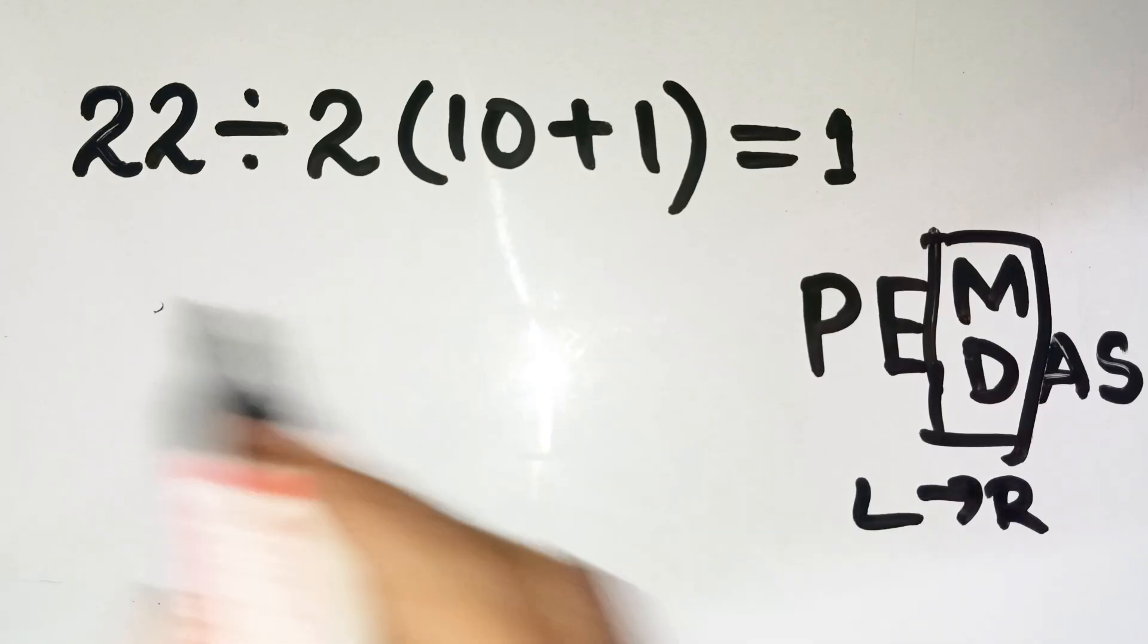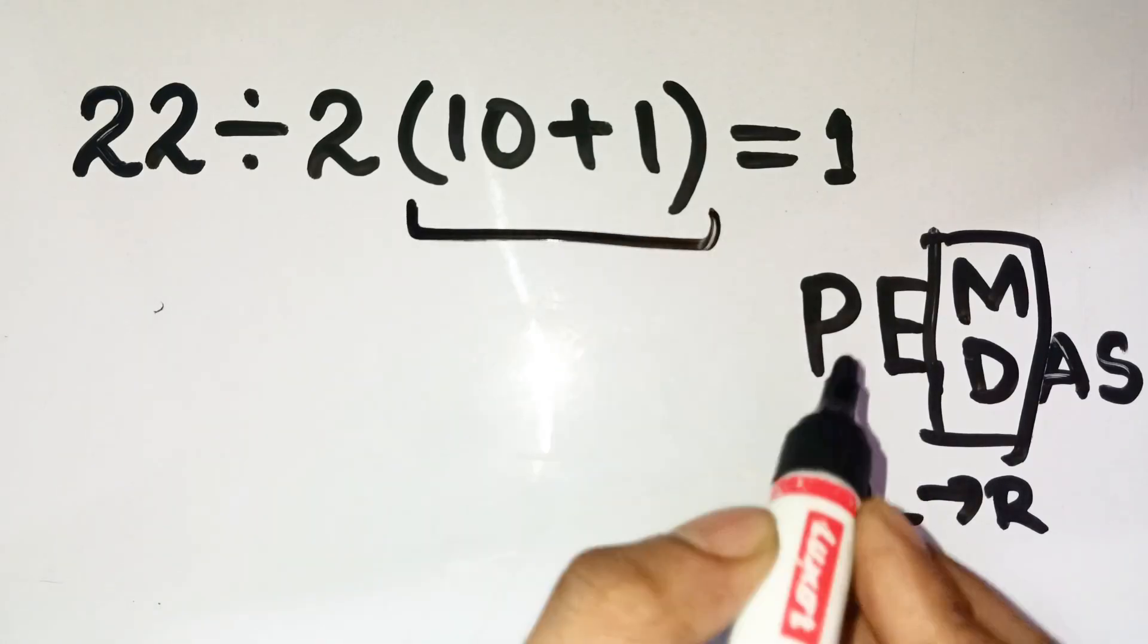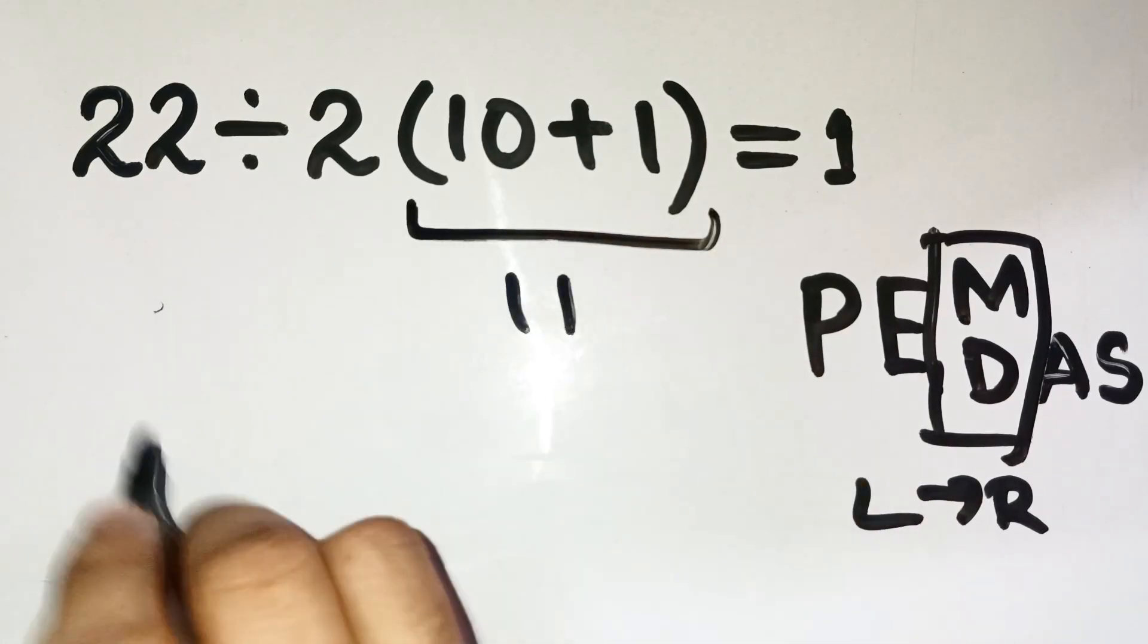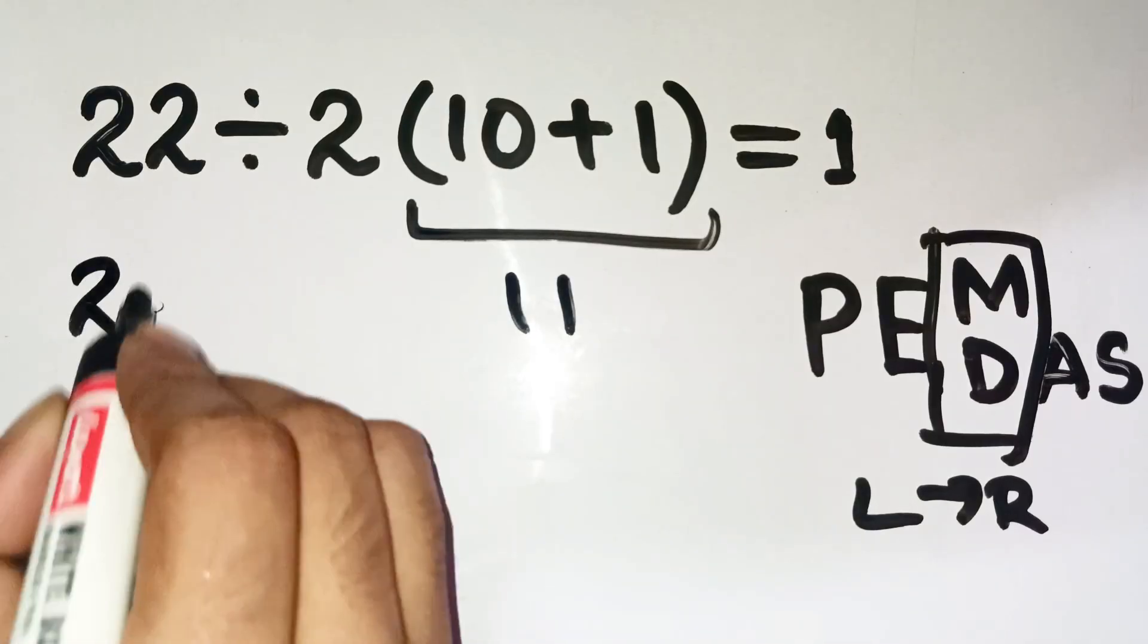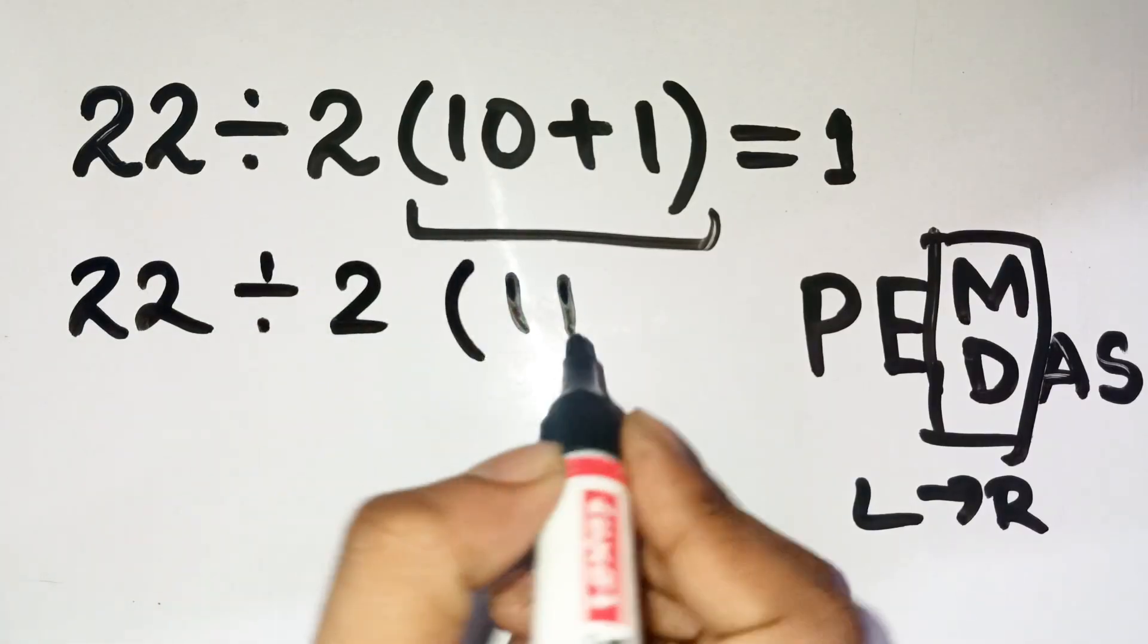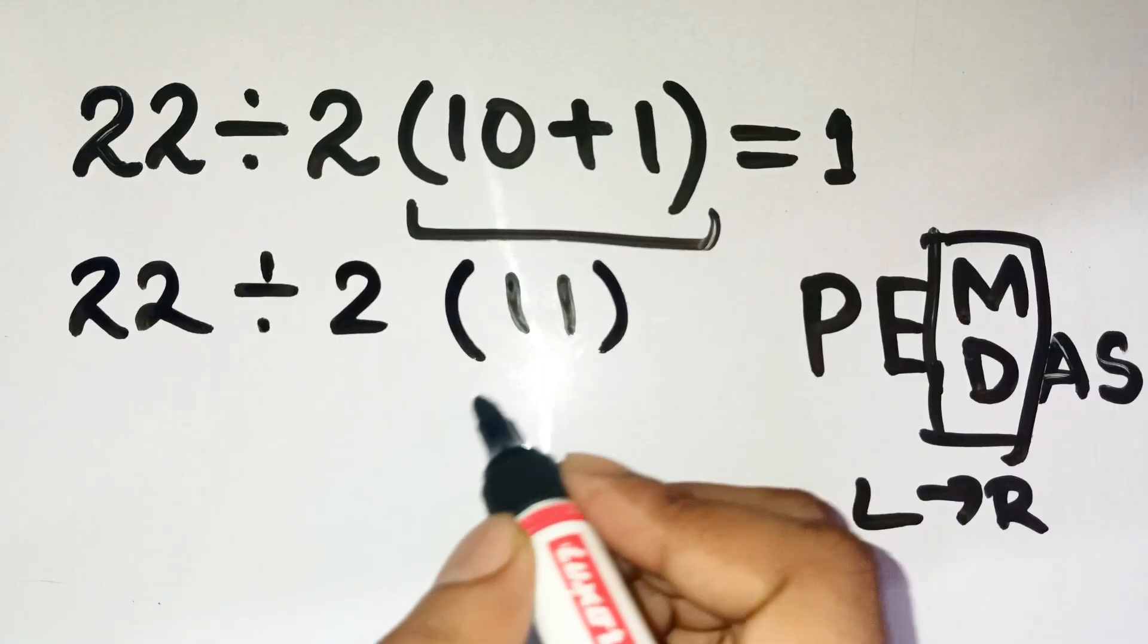Alright, step 1, the parenthesis. Inside, 10 plus 1 equals 11. Now, the problem becomes 22 divided by 2, open parenthesis, 11, close parenthesis.